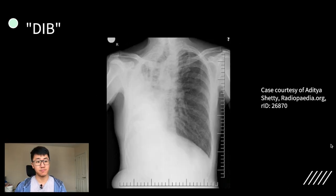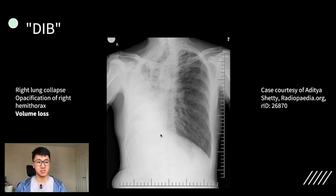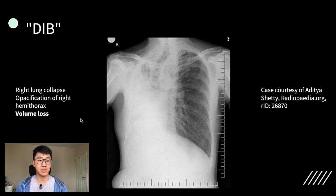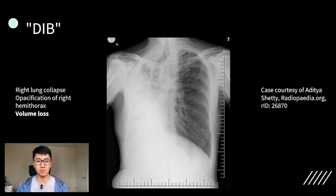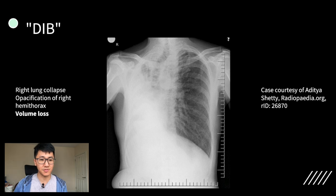Now have a look at this one. So this is quite a tough one because you have widespread opacification of the right hemithorax. Your initial thoughts might be that this could either be a very large effusion or a very large collapse. The way to tell is to look at the associated features. In this case, the mediastinum is very severely pulled towards the site of the abnormality, and that's consistent with volume loss, which would be a sign of collapse. So this is right lung collapse rather than a large right pleural effusion.